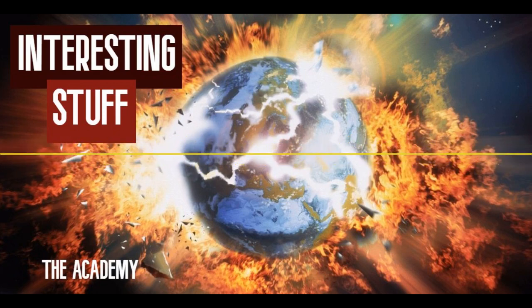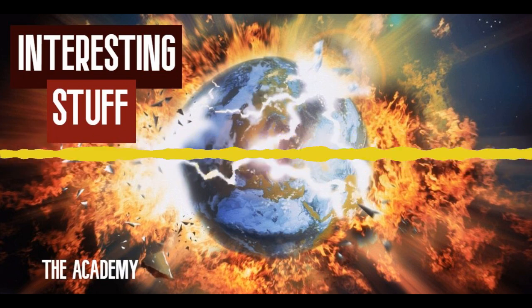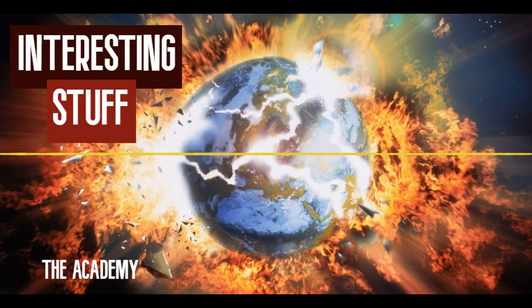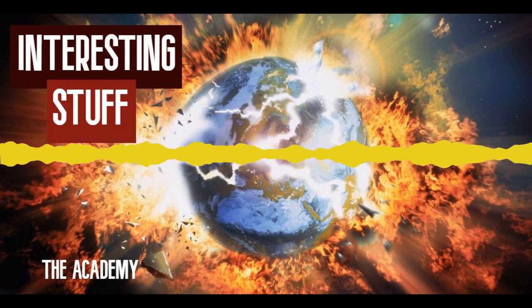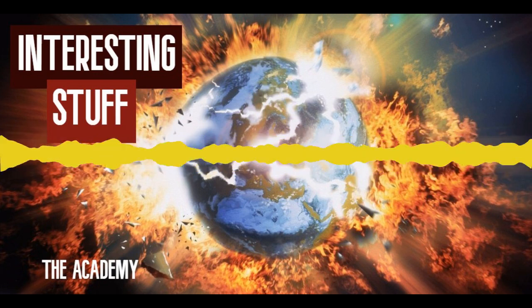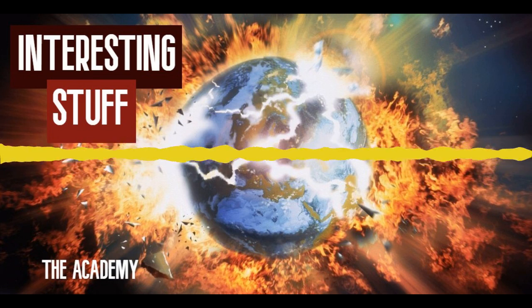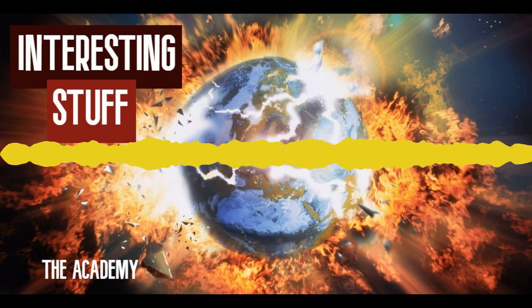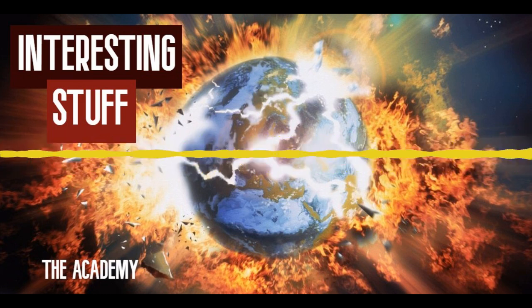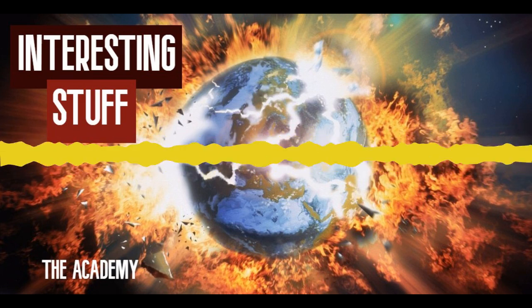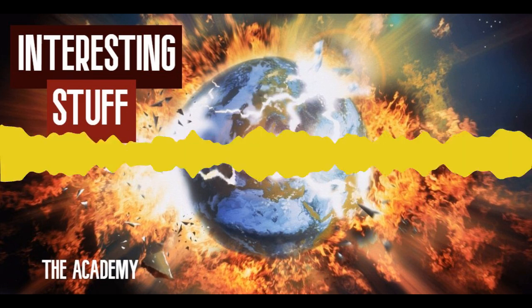Some ant colonies can be mind-bogglingly big. The largest found so far was an amazing 3,700 miles wide - a connected super colony in southern Europe made up of millions of nests and billions of Argentine ants. Other species live in sophisticated farming colonies. These ants collect leaves and feed them to specialized fungi that they carefully cultivate in underground chambers. Ants started farming around 60 million years ago, way before humans thought of the idea.